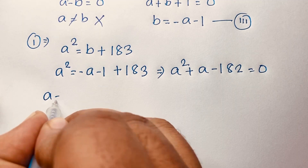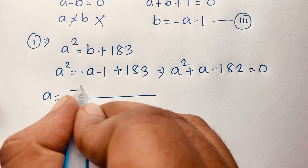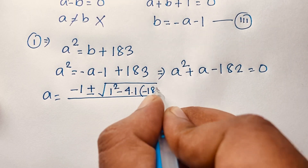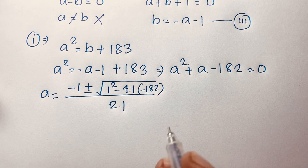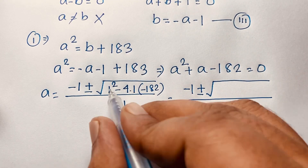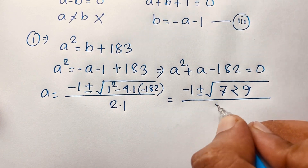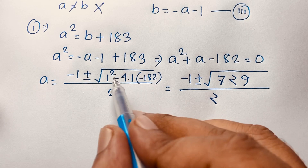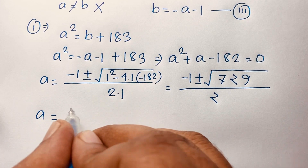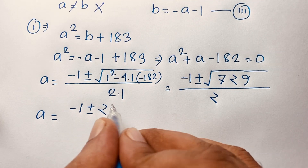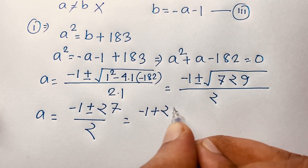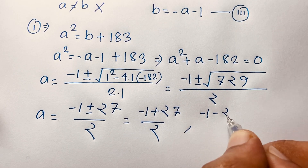Applying the quadratic formula: a equals minus 1 plus or minus the square root of (1 squared minus 4 times 1 times negative 182) over 2. This gives minus 1 plus or minus the square root of (1 plus 728) over 2, which is minus 1 plus or minus the square root of 729 over 2. Since the square root of 729 is 27, we get a equals minus 1 plus or minus 27 over 2.